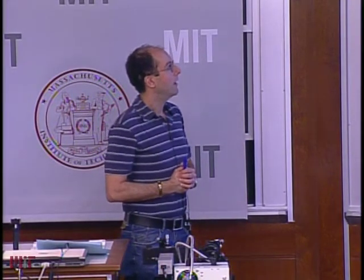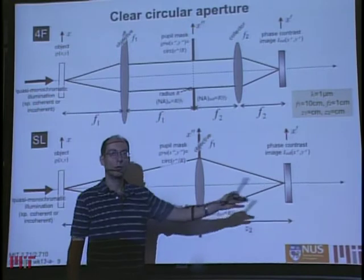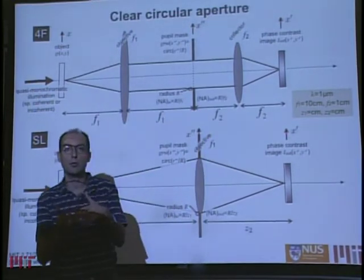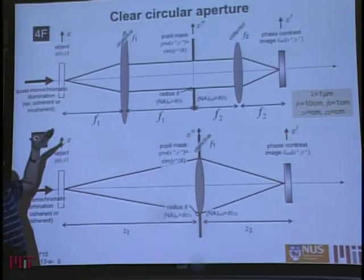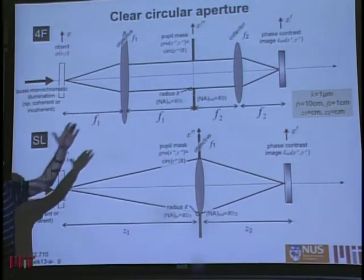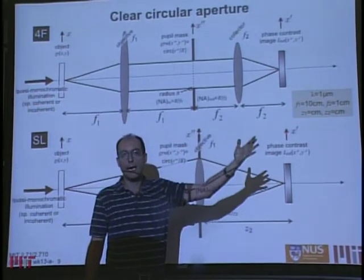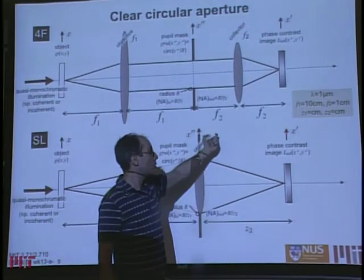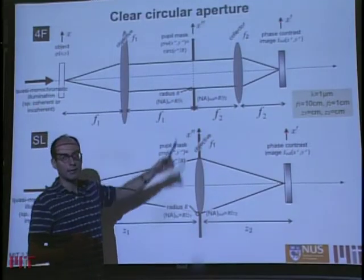The key takeaway is: given the same physical aperture size, the 4F system gives a larger numerical aperture and thus a narrower PSF. This means less blur and better resolution. Given our physical resources, we should try to maximize the numerical aperture, and that is what the 4F system achieves.